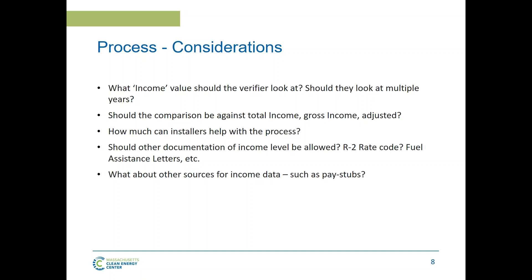Another consideration is what other types of documentation might be allowed. In some of our clean heating and cooling programs, we do accept an R2 rate code or fuel assistance letter as verification of income under a certain amount. For the Mass Solar Loan Program, we go through the third-party income verification for every applicant as the sole path in — a balance of simplicity and replicability while treating all applicants the same way, and also making sure we're not limiting the process unnecessarily.